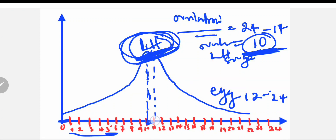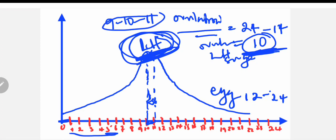That means these are the most fertile days of your menstrual cycle. For this 24-day cycle, the most fertile days are from the 9th day up to the 10th day, and from the 10th day up to the 11th day of the cycle.